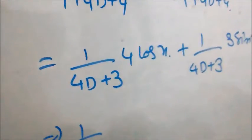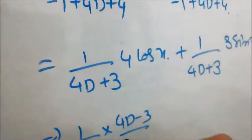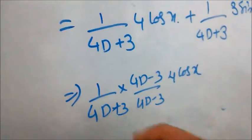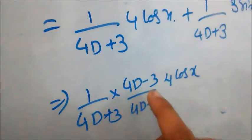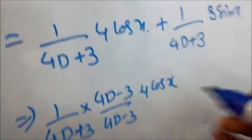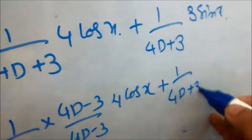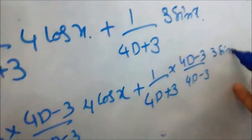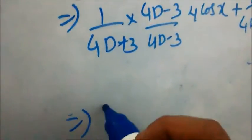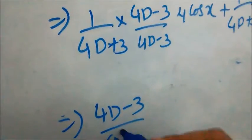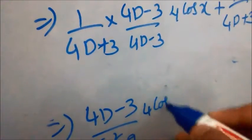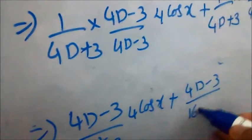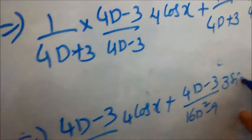Rationalizing: for 1/(4D + 4) · 4cos(x), when rationalizing, multiply numerator and denominator by the conjugate with a minus sign. For the second term, multiply 1/(4D + 3) by (4D - 3)/(4D - 3) · 3sin(x). This gives: (4D - 3)/(16D² - 9) · 4cos(x) + (4D - 3)/(16D² - 9) · 3sin(x).